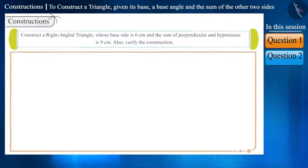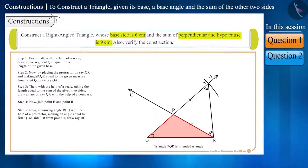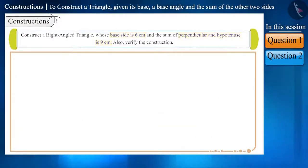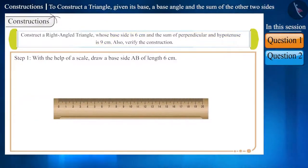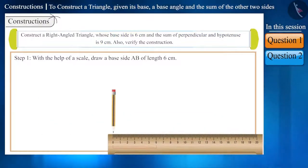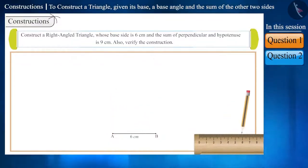In the previous video, we have seen the construction of a triangle for this type of given lengths. Steps for the construction of such a triangle are as follows. Step 1: First of all, with the help of a scale, draw a base side AB of length 6 cm.